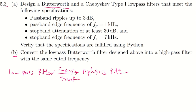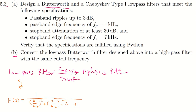For the Butterworth low-pass filter we have here, the transfer function H(s) equals one over — because it was a second-order low-pass Butterworth filter — its transfer function is in the format: (s/ωc)² + (s/ωc)·√2 + 1 in the denominator.